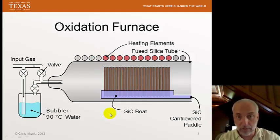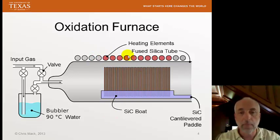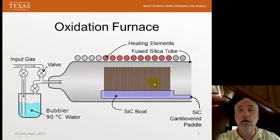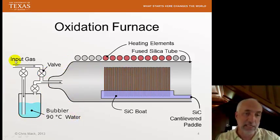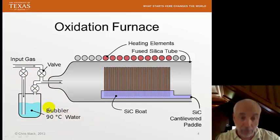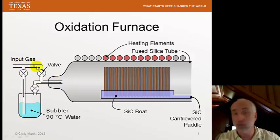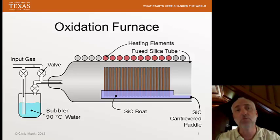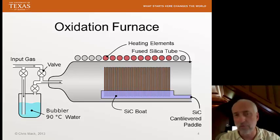We also have heating elements looping around this tube. We turn on these heating elements to adjust and maintain the temperature profile we want. So we have a boat with wafers and a furnace we can heat up. Our reactants are input through a set of valves and input gas lines. We might have a bubbler if we want to input water — one of the ingredients might be water. We might have plain oxygen, and we'll also have carrier gases like argon and nitrogen. We can add other components as needed, with mass flow controllers ensuring the proper flow of the proper materials into the furnace.